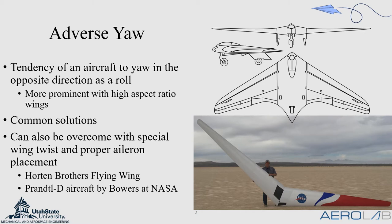Another way to overcome adverse yaw is to use a special twist distribution on the wing with proper aileron placement. The Horton brothers were the first to implement this approach and they developed various flying wings, a schematic of which is shown here.